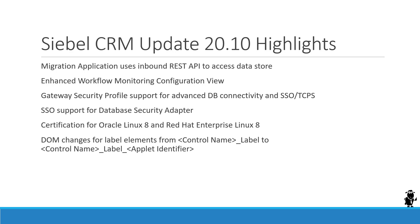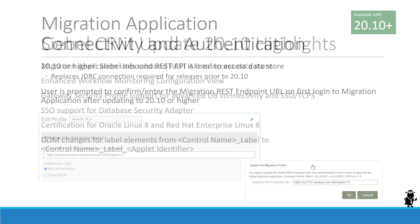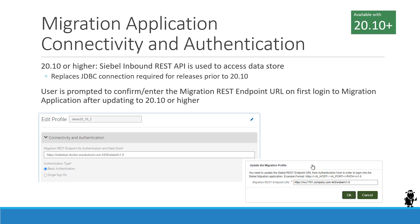Let's take a closer look at some of these highlights. First, the migration application and what this is about with the REST API for connectivity and authentication. In prior releases, the migration application required an Oracle client on the machine to establish a JDBC connection to retrieve data accessible via the REST API for the migration application — data such as connections, migration plans, and historical executions — all stored in tables.